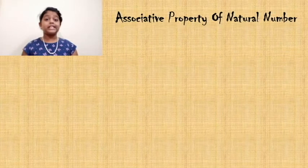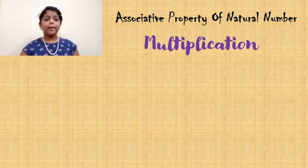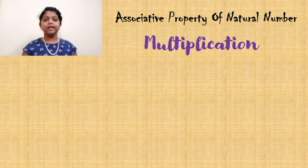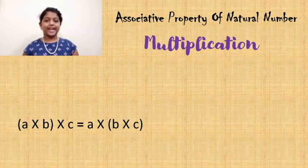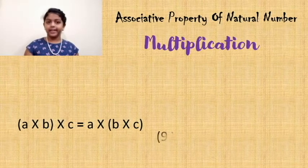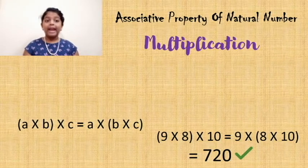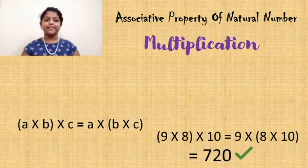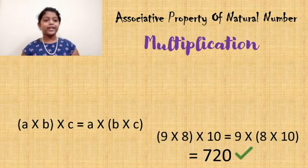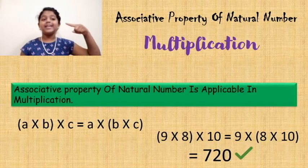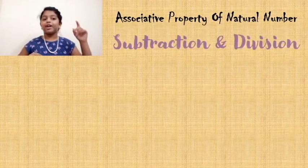Now let's check whether the associative property of natural number is applicable in multiplication. The formula is (A × B) × C = A × (B × C). With the example, (9 × 8) × 10 = 720, and 9 × (8 × 10) is also 720. As we are getting the product same in these two cases, the associative property of natural number is applicable in multiplication.